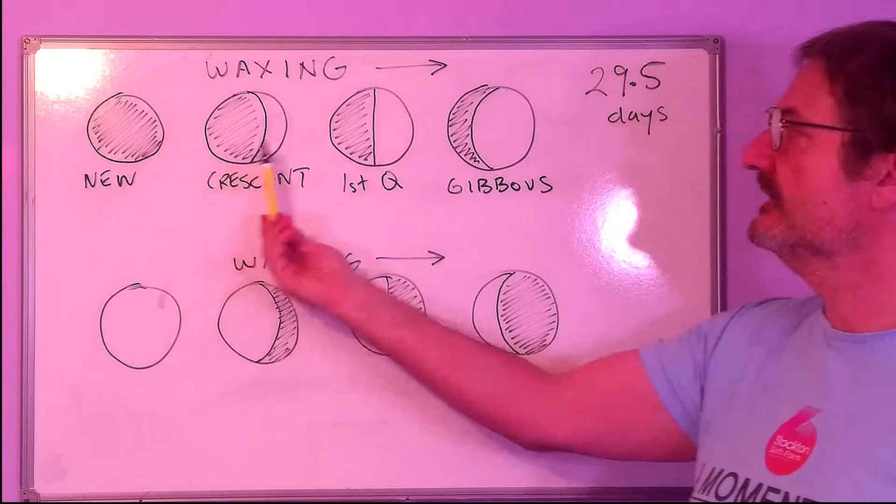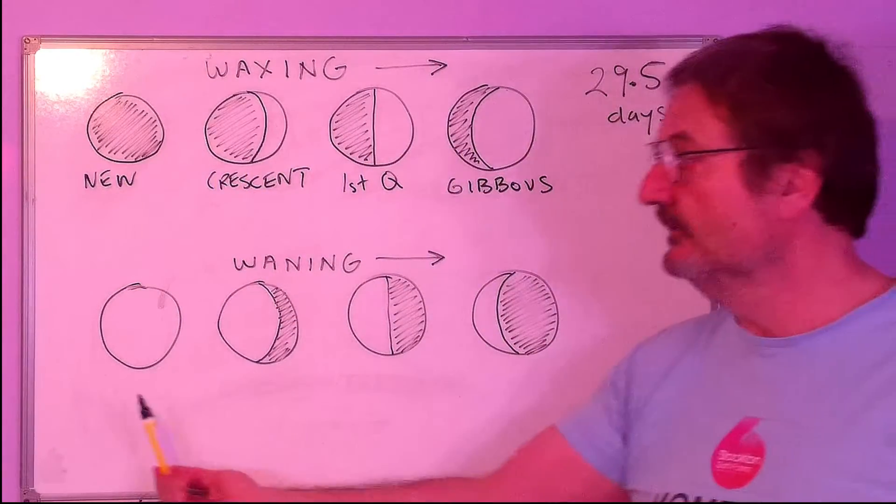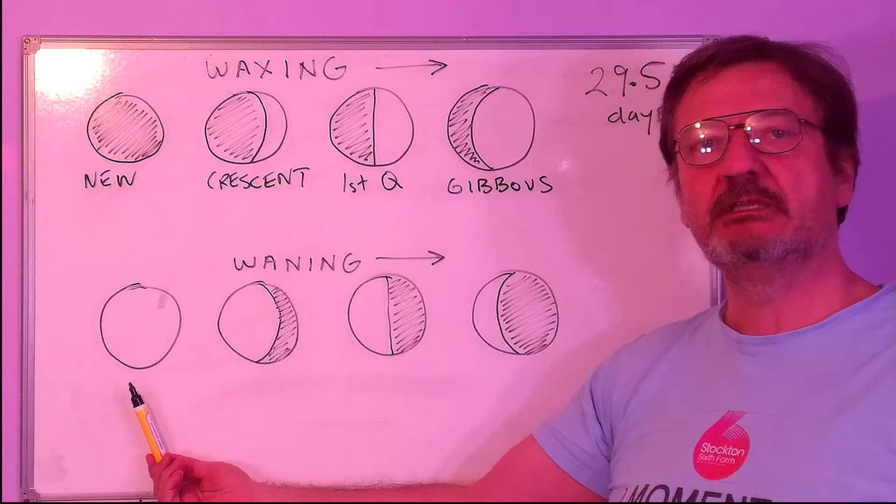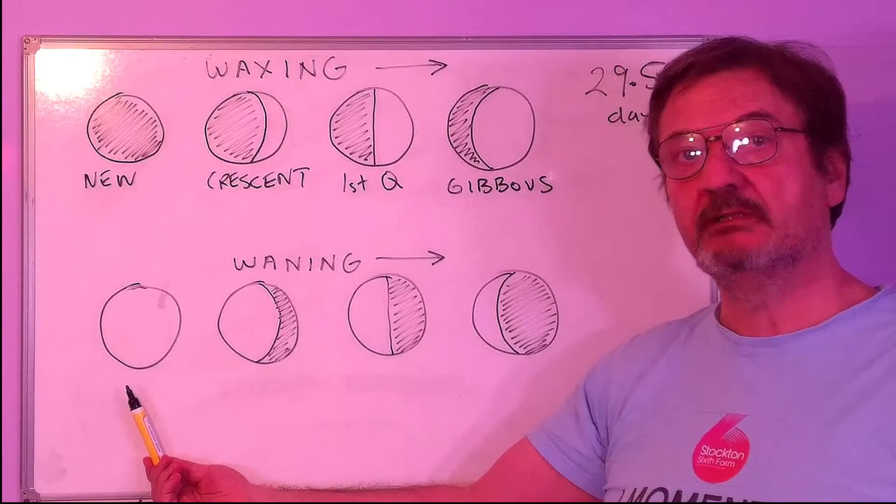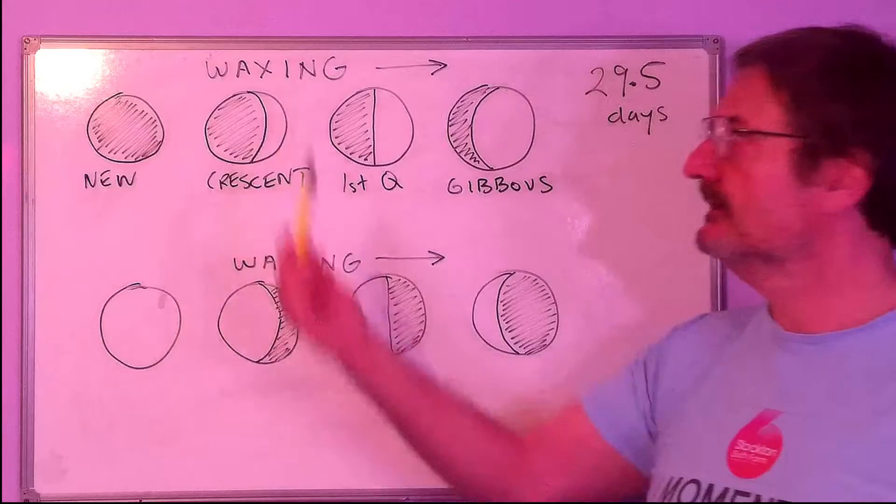From a new moon, crescent, first quarter, gibbous, to a full moon, the moon is getting bigger. What we can see is getting bigger, rather, and that's a waxing moon.